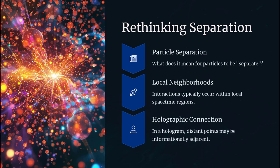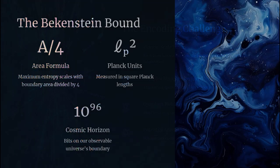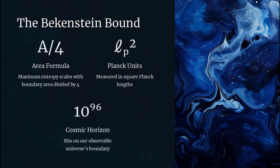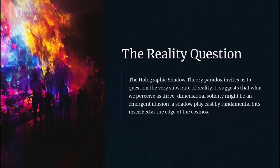Holographic shadow theory takes this a step further, proposing that our entire universe might be a projection of data inscribed on the cosmological horizon, rendering our bodies and surroundings as shadows cast by two-dimensional information. If valid, this idea upends our conventional notion of dimensions and suggests that space itself is an emergent phenomenon rather than fundamental.